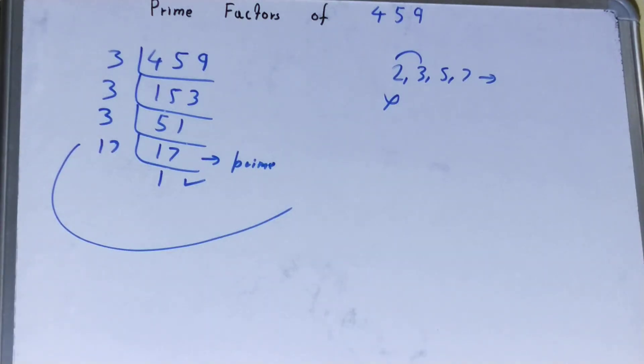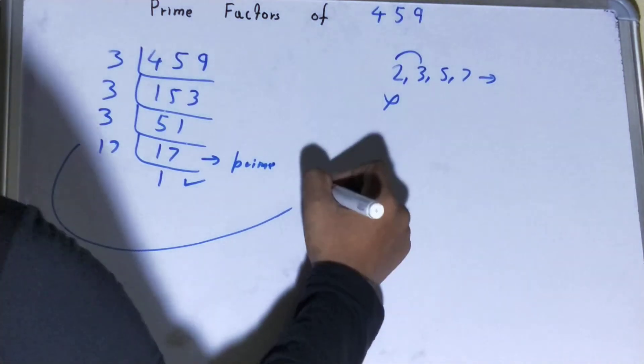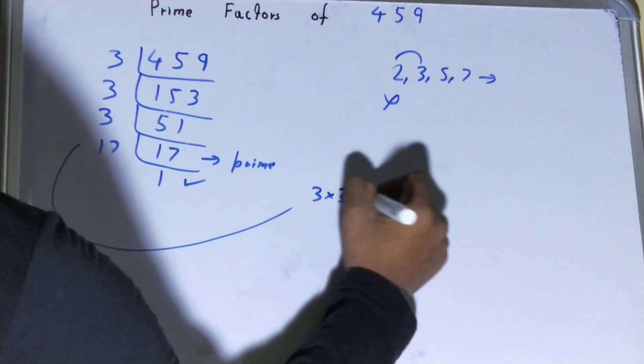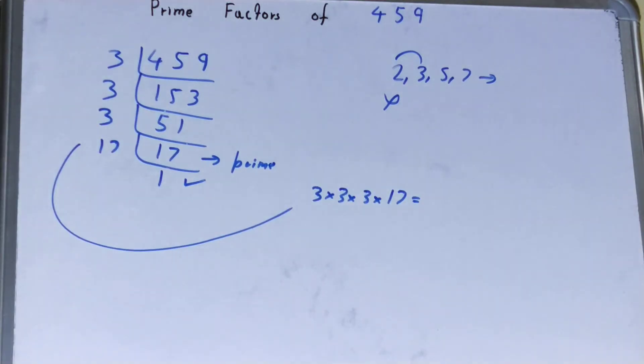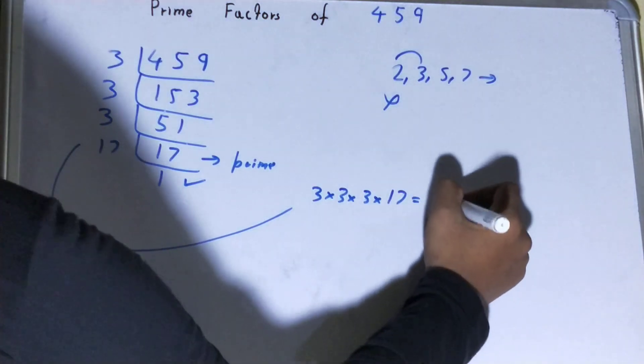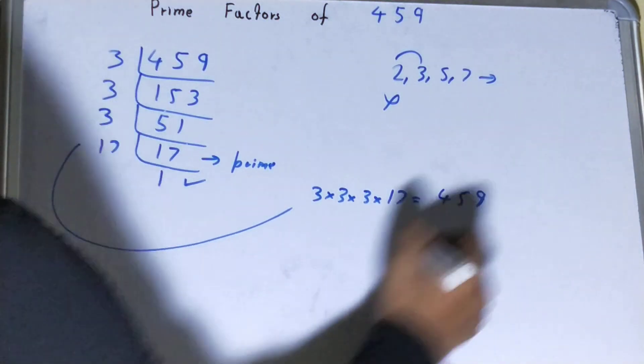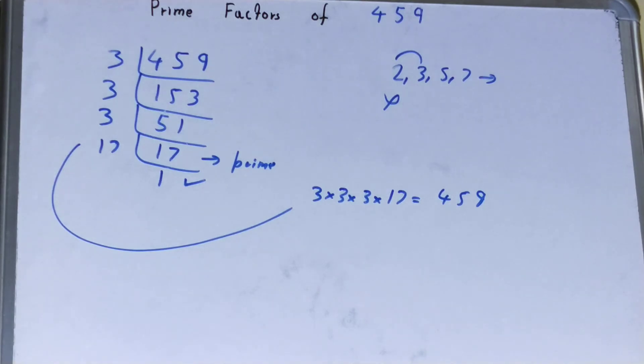Whatever you have on the left-hand side will be the prime factors of the number 459, that is 3 × 3 × 3 × 17. If you want to check whether it is right or not, you can multiply them. If on multiplying you get the number back again, that means your calculation is correct.